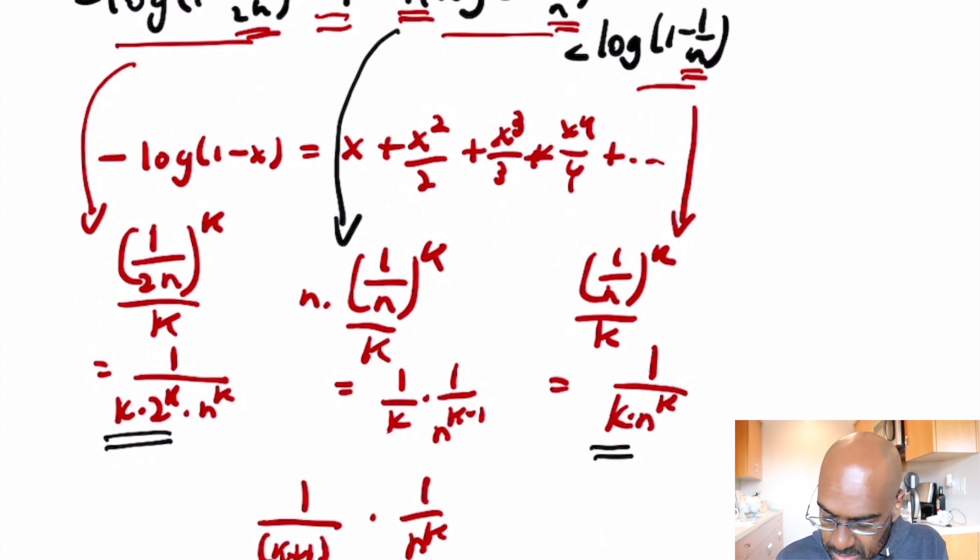Okay, and so since k plus 1 exceeds k, this quantity is actually going to be less than this quantity. And this quantity is also going to be greater than this quantity for k greater than 1, because for k greater than 1, k plus 1 is less than k times 2 to the k.